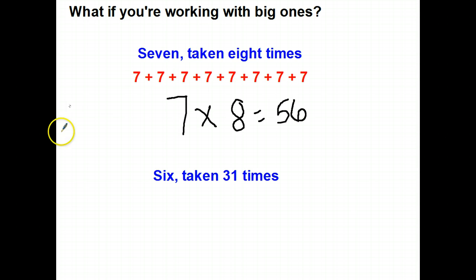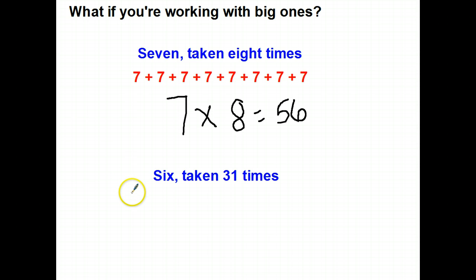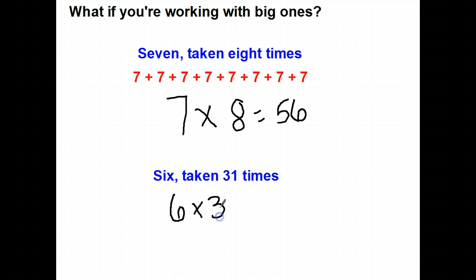Or worse yet, what if you have six taken 31 times? I'm not going to sit here and write out six 31 times. And besides, trying to count by six that far will make you crazy. So we write it six taken 31 times. It means that there are 31 groups of six.